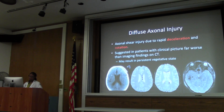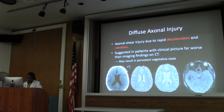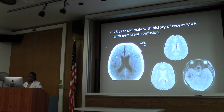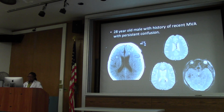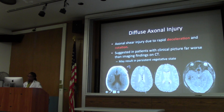Diffuse axonal injury is suggested when the patient's clinical picture is far worse than what we see on CT - these injuries hardly ever show up on CT. MRI really is the modality of choice. These patients could even become persistently vegetative, so it's an important injury to be aware of as a radiologist because the CT can be very deceptive. On CT, many people will call these parenchymal contusions, but if you look carefully, some are at the grey-white junction and some in white matter structures - that should prompt full evaluation.